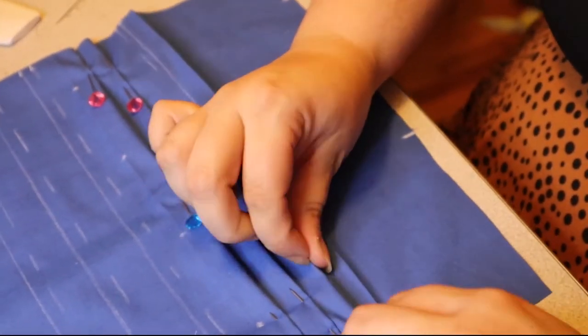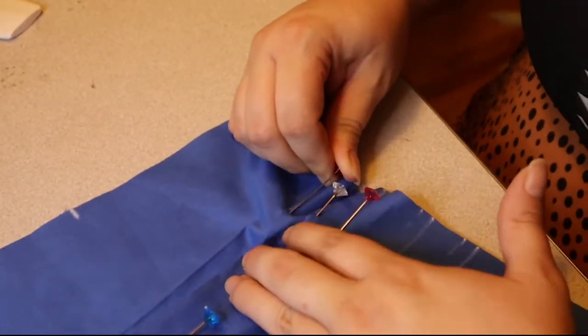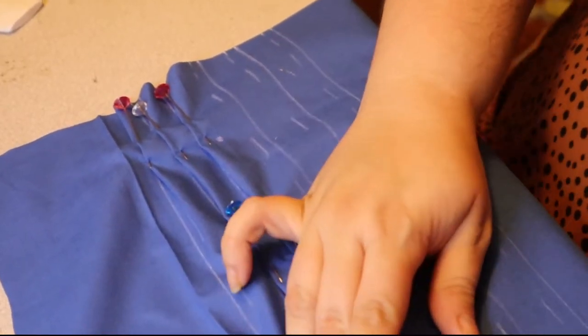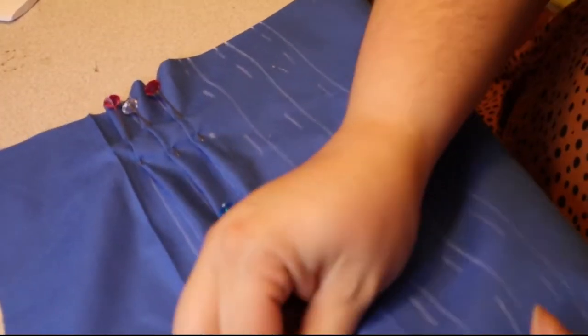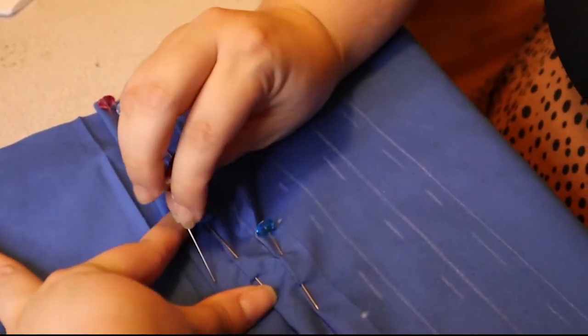Make sure you line the pins exactly how you're gonna run it through the machine. You're not gonna run the needle onto the pins because you don't want to break your machine. So as you sew you will remove the pins, so having them facing all the same way really helps in making it easier for you to remove them.